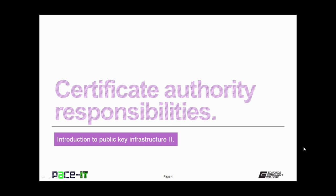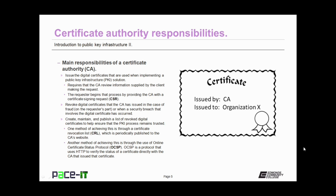I'm going to begin by discussing Certificate Authority Responsibilities. The CA has two main responsibilities. First, it is responsible to issue the digital certificates that are used when implementing a public key infrastructure solution. This requires that the CA review information supplied by the client making the request for the digital certificate. The requester begins the process by providing the CA with a CSR, or Certificate Signing Request.